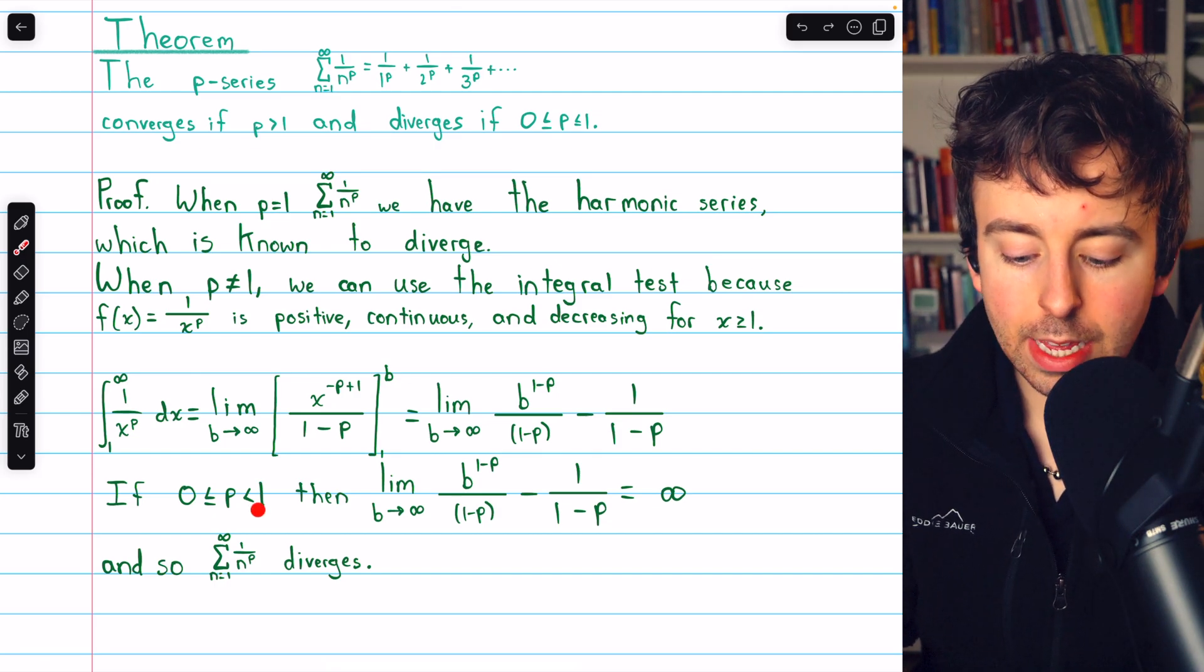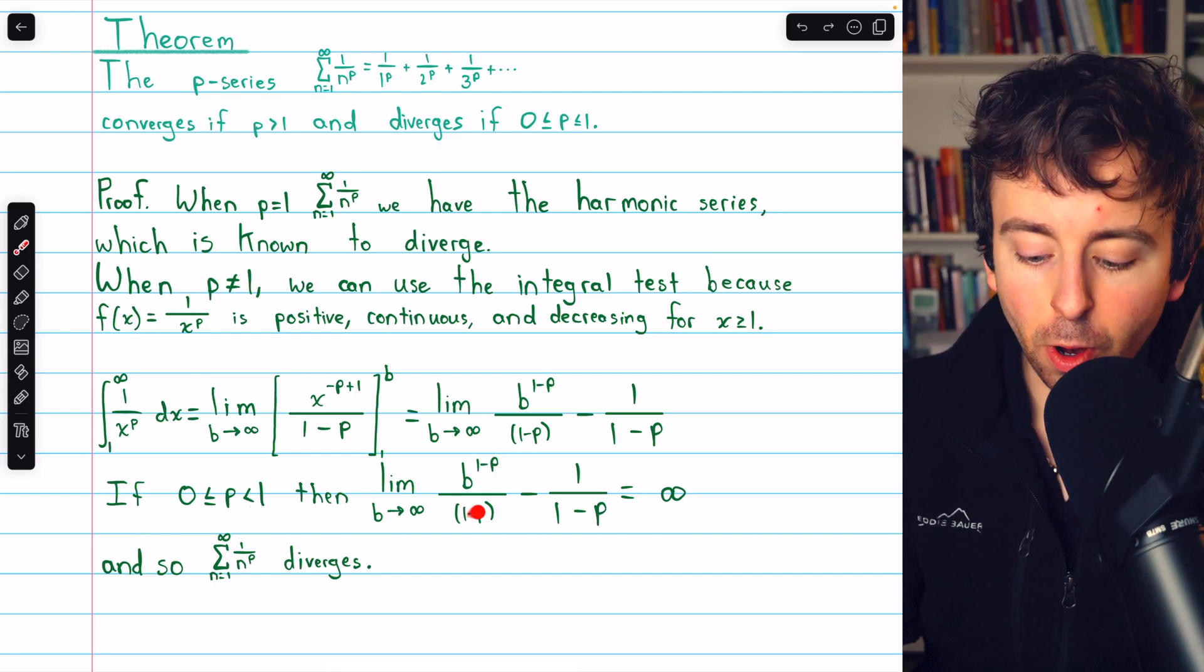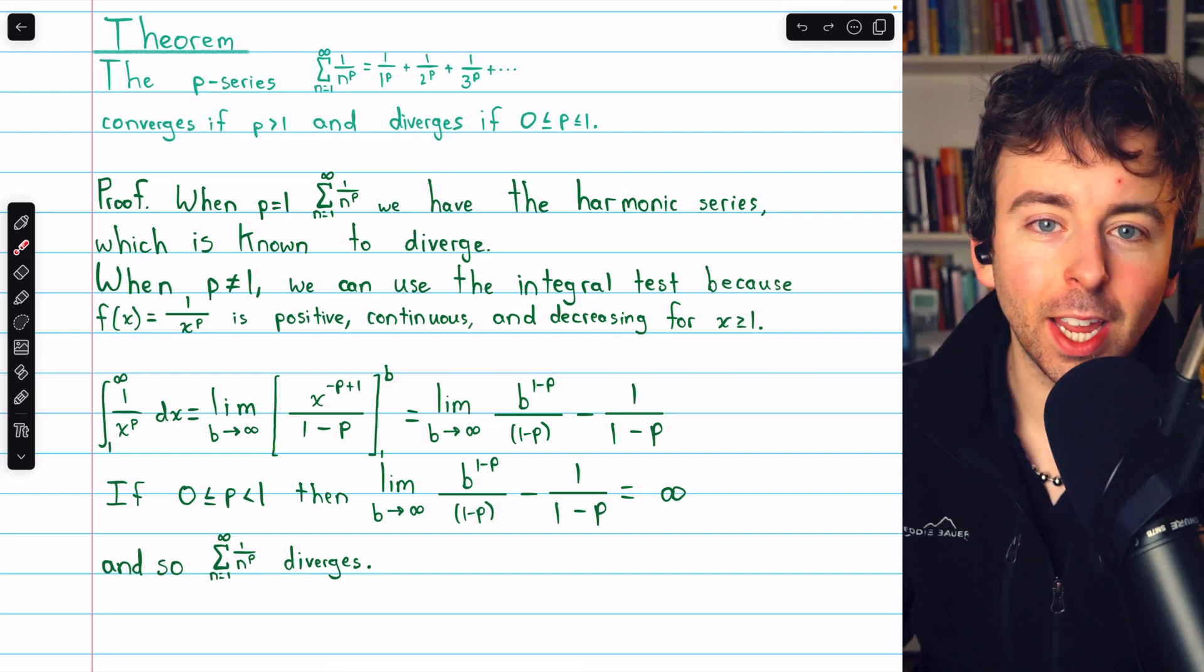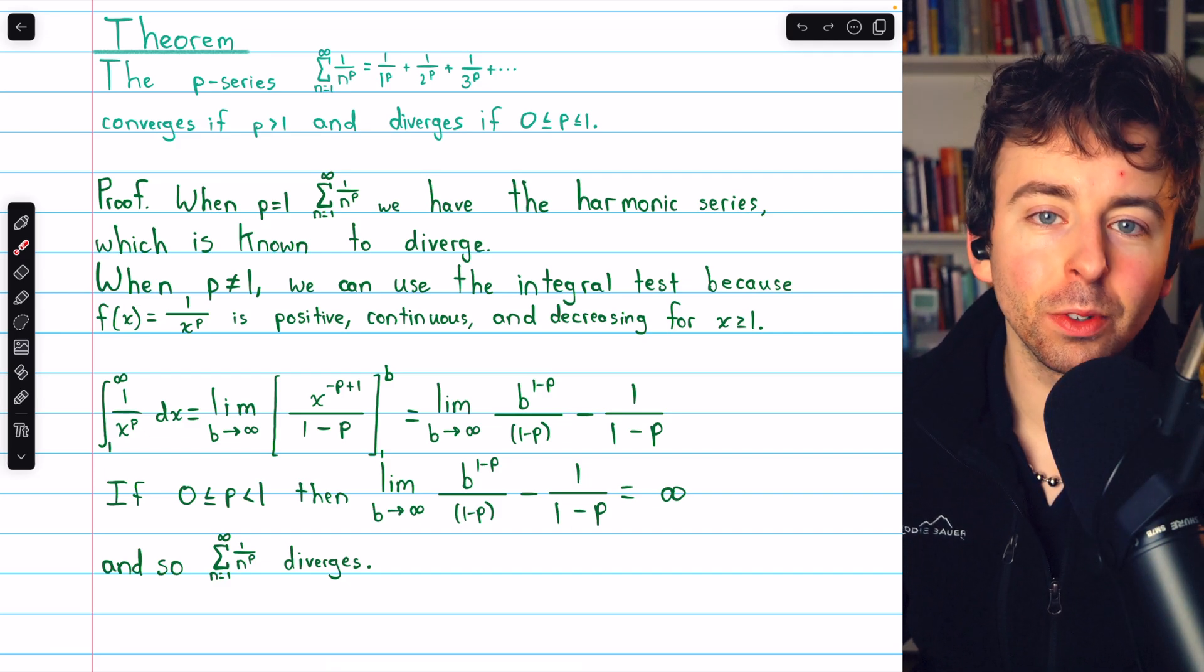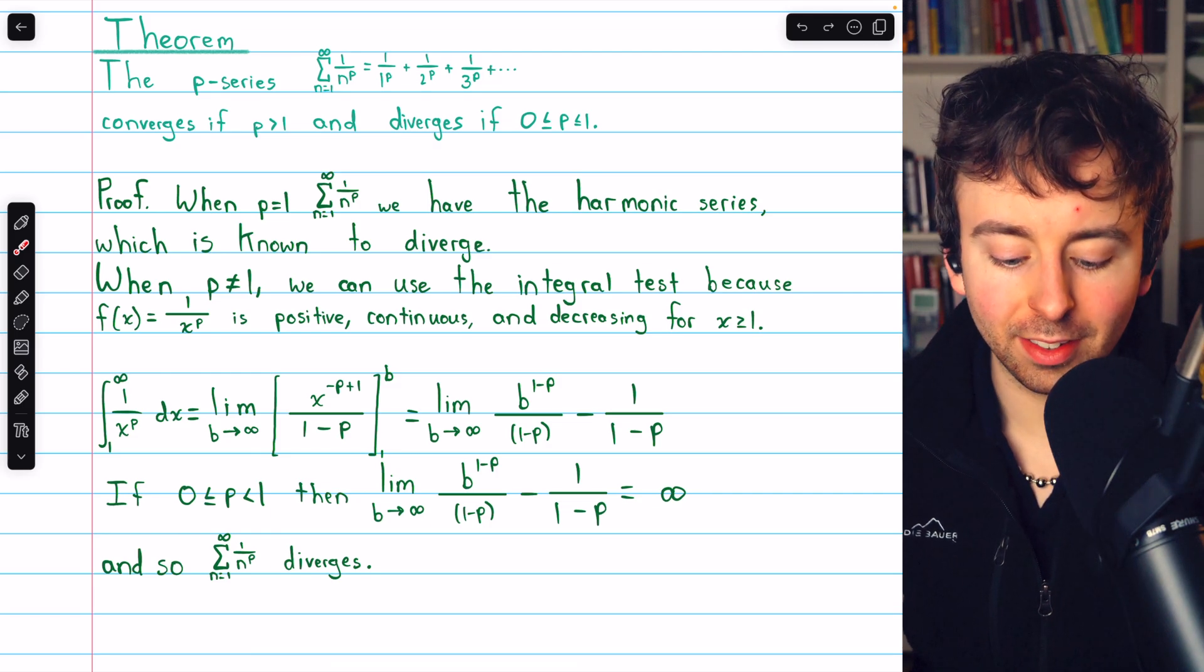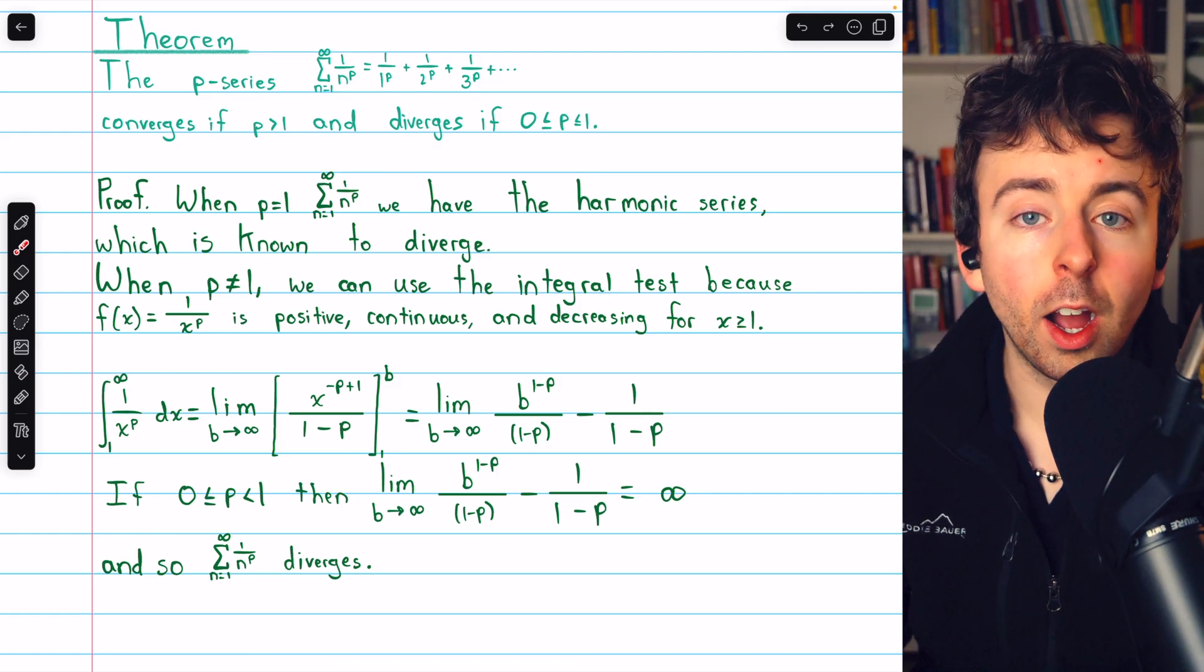You can see in the case where p equals 1, we get some 0s going on here. It's more complicated, so it's good that we know when p equals 1, we have the harmonic series. We already discussed that. We know that diverges.